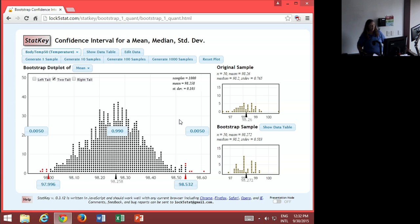So now we have our 99% confidence interval. We see it's going from 97.996 to 98.532. We see that it's wider than the 95% confidence interval.